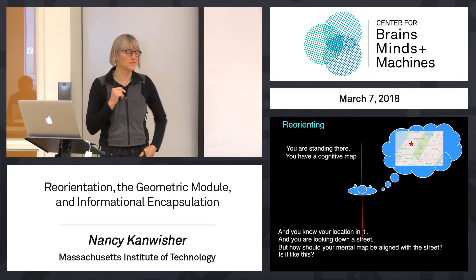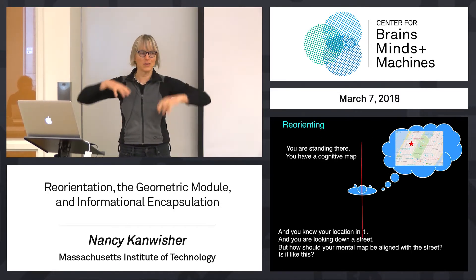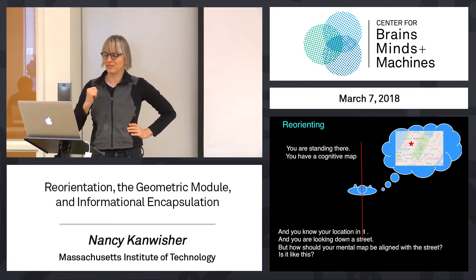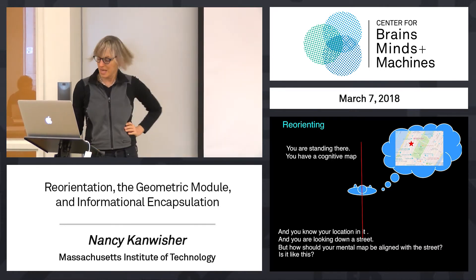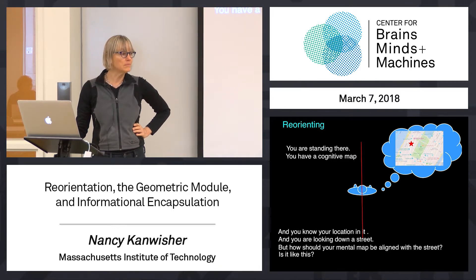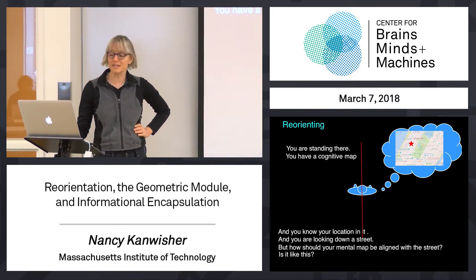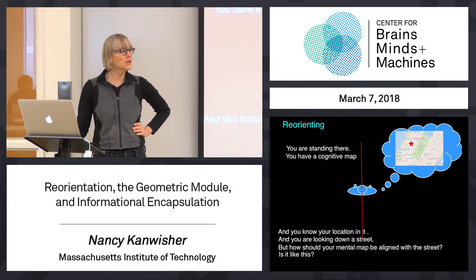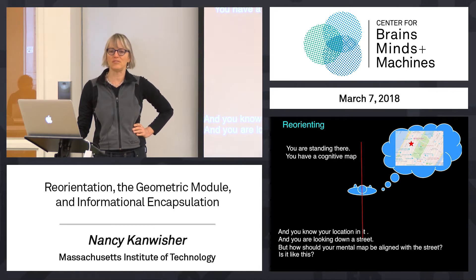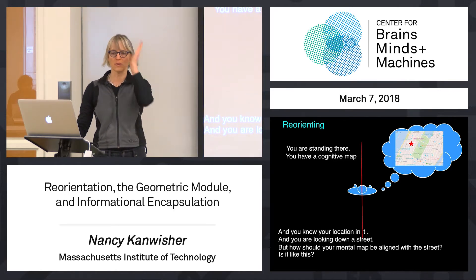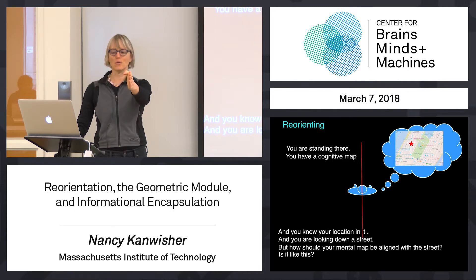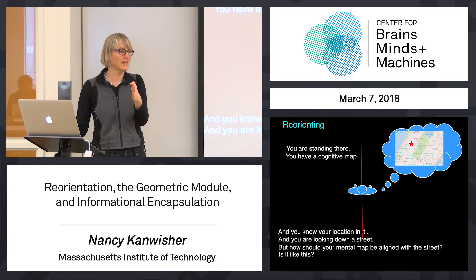Let's talk a little more about what's involved. Here's kind of an aerial view. You're standing in Manhattan, facing this way. You have a cognitive map — you know your way around Manhattan, more or less. You know your location in it. You got off at that subway stop. You know where you are. That's not the problem. You can also see what's in front of you — there's a street like this, and you're facing right down the street. The problem is, how do you orient that cognitive map to this street you're looking at?